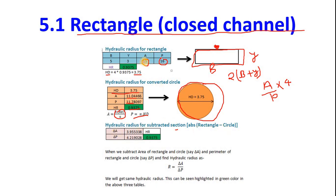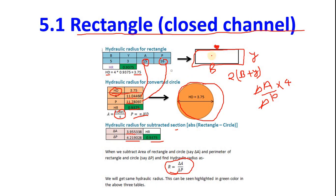Now take the subtracted section: delta-A is the area of the rectangle minus the area of the circle, and delta-P is the difference of their perimeters. Finding the hydraulic radius for delta-A and delta-P gives the same value of 0.9375. This demonstrates that hydraulic diameter converts a rectangular section into an equivalent circular section for any cross-section, whether closed or open channel.